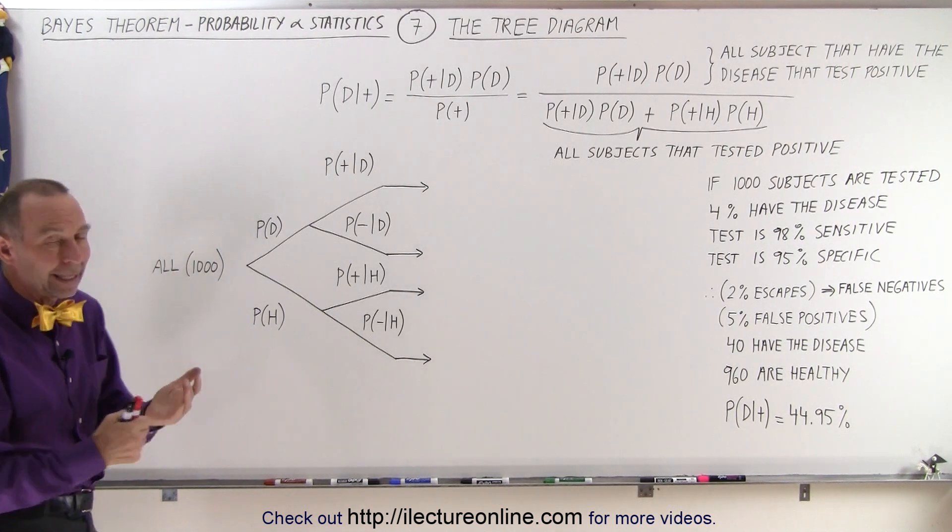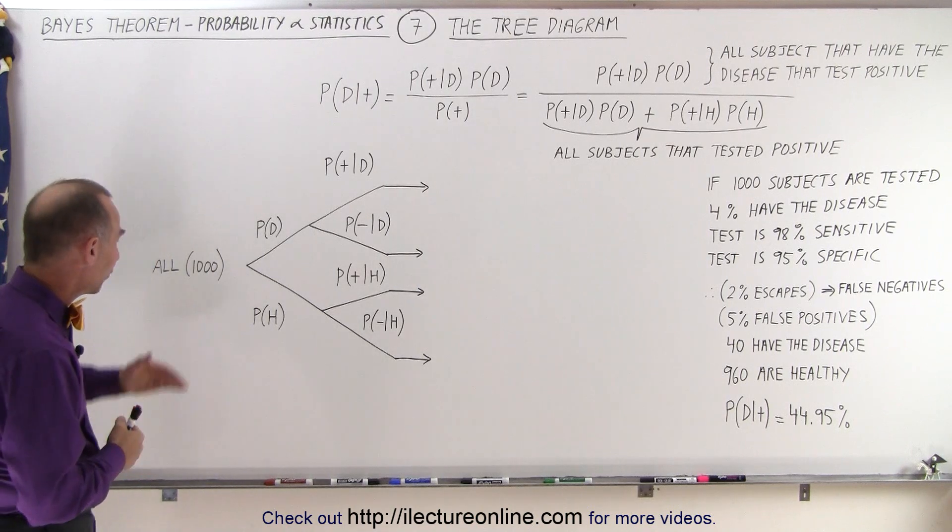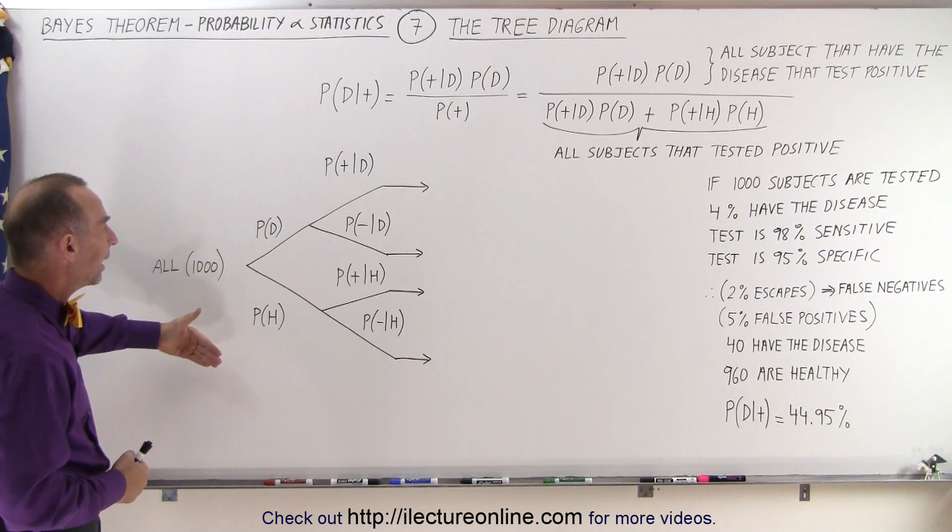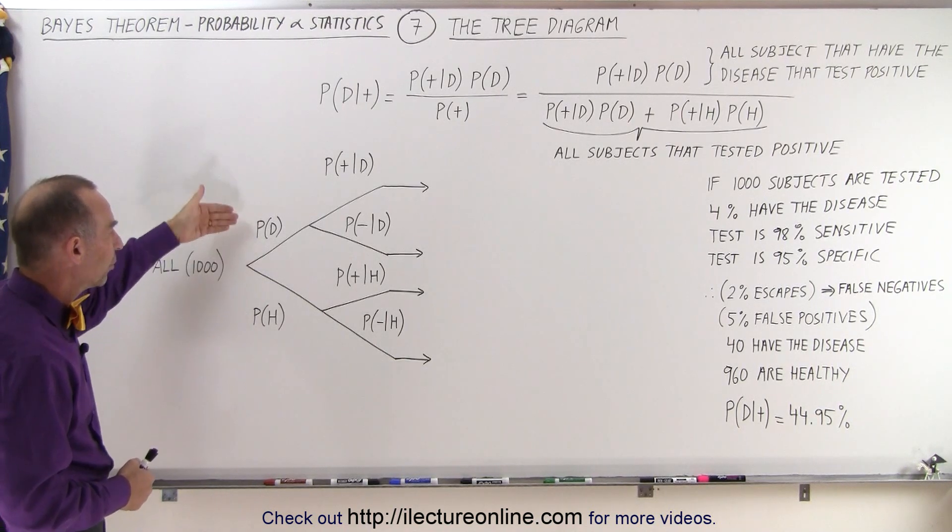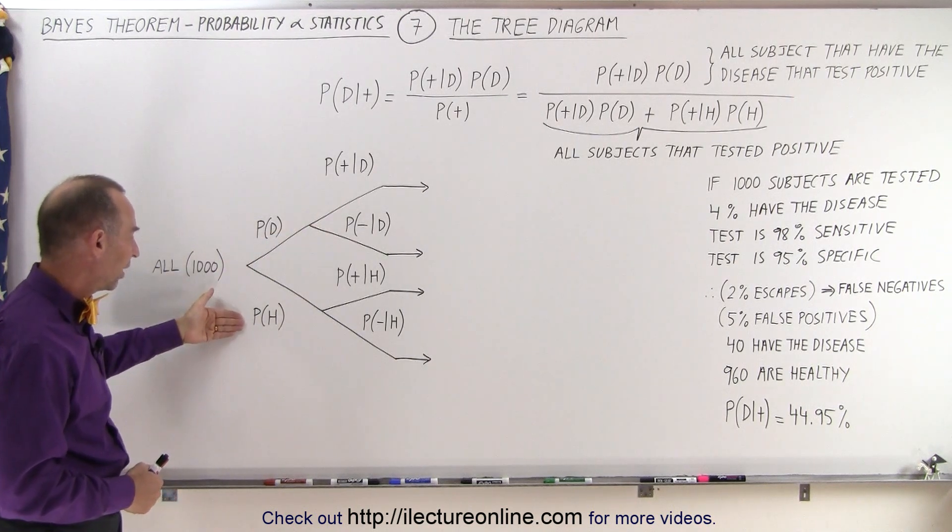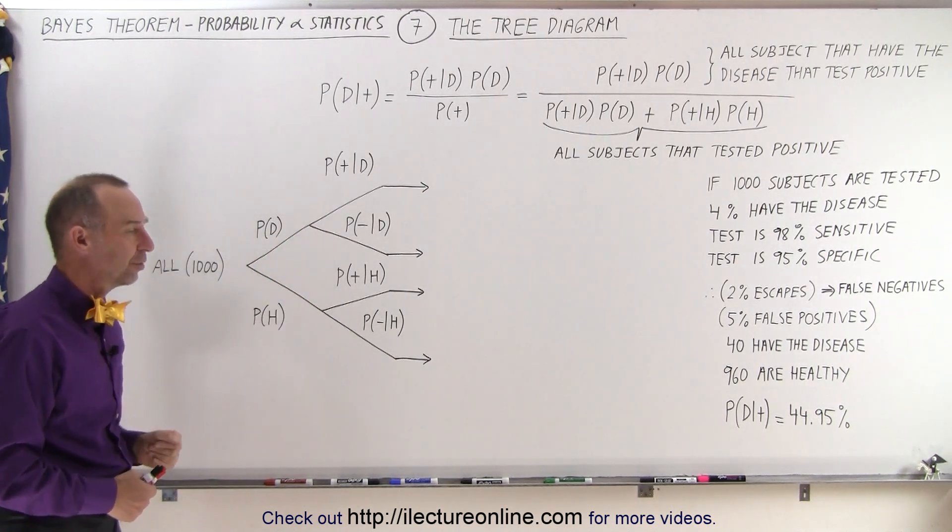So here we're going to apply again to our example that we've seen before. We had a thousand subjects, some of them had disease, some of them were healthy, and then we're going to run tests on them. The ones that have disease, some will test positive, some will test negative. The ones that are healthy, some will test positive, and some will test negative.